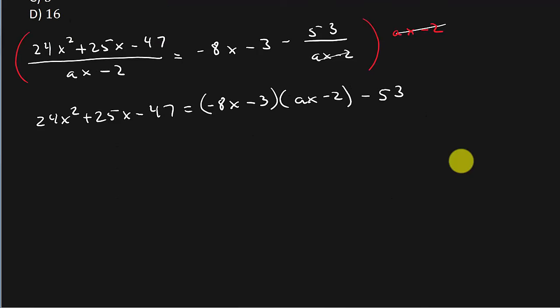And so now I'm going to have 24x squared plus 25x minus 47 equals, now if I foil this I get negative 8ax squared, the first, outside, plus 16x, minus 3ax plus 6 minus 53.